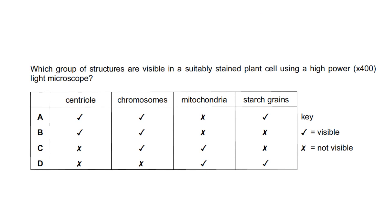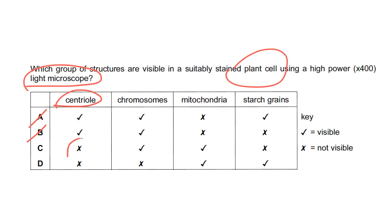Question: which group of structures are visible in a suitably stained plant cell using a high-power light microscope? Two key points: it's a light microscope, and it's a plant cell — so centrioles are not present, eliminating options A and B. Chromosomes are visible depending on whether the cell is dividing. Mitochondria are definitely visible, and starch grains will always be visible with the light microscope — making that the key answer: D.